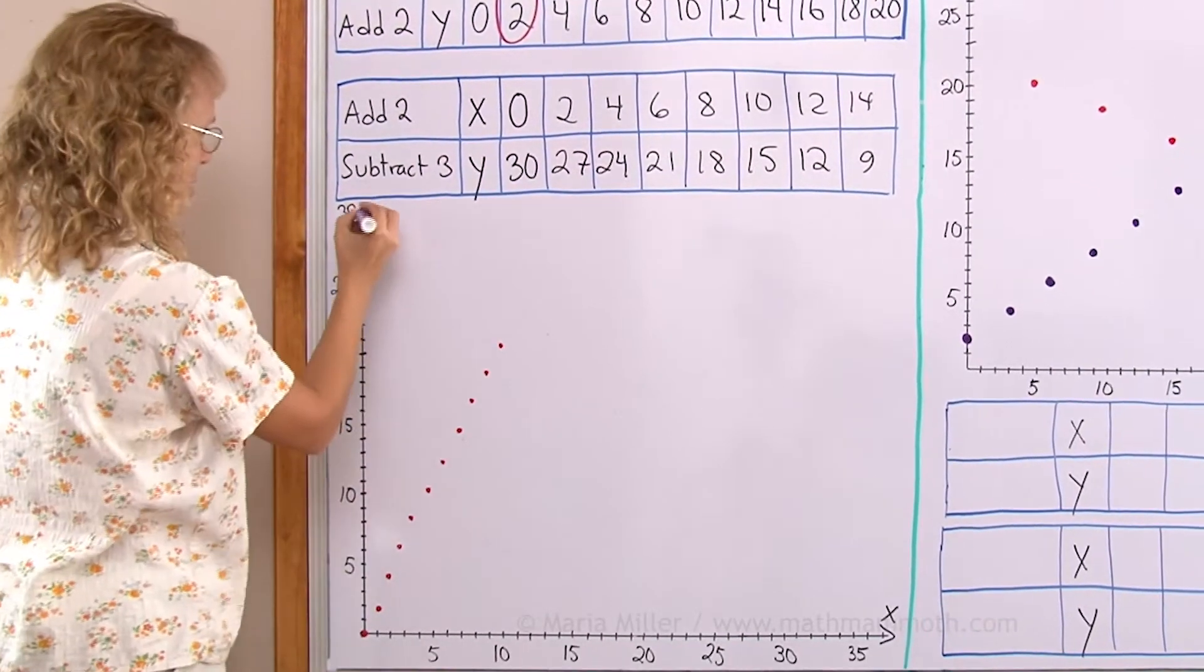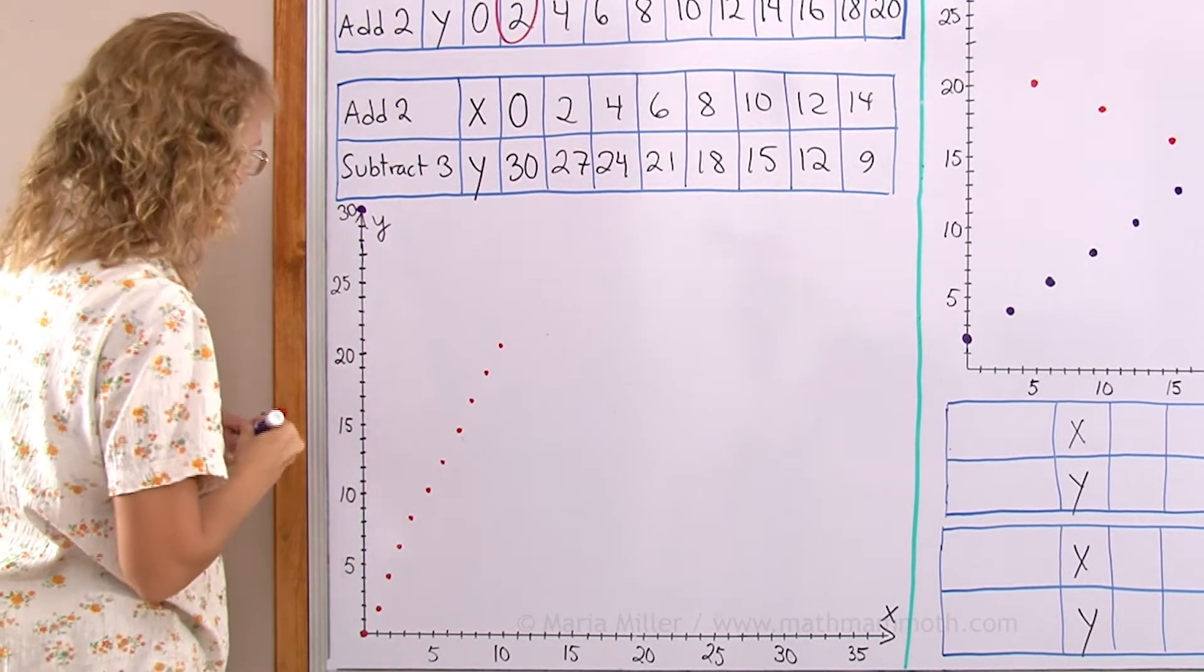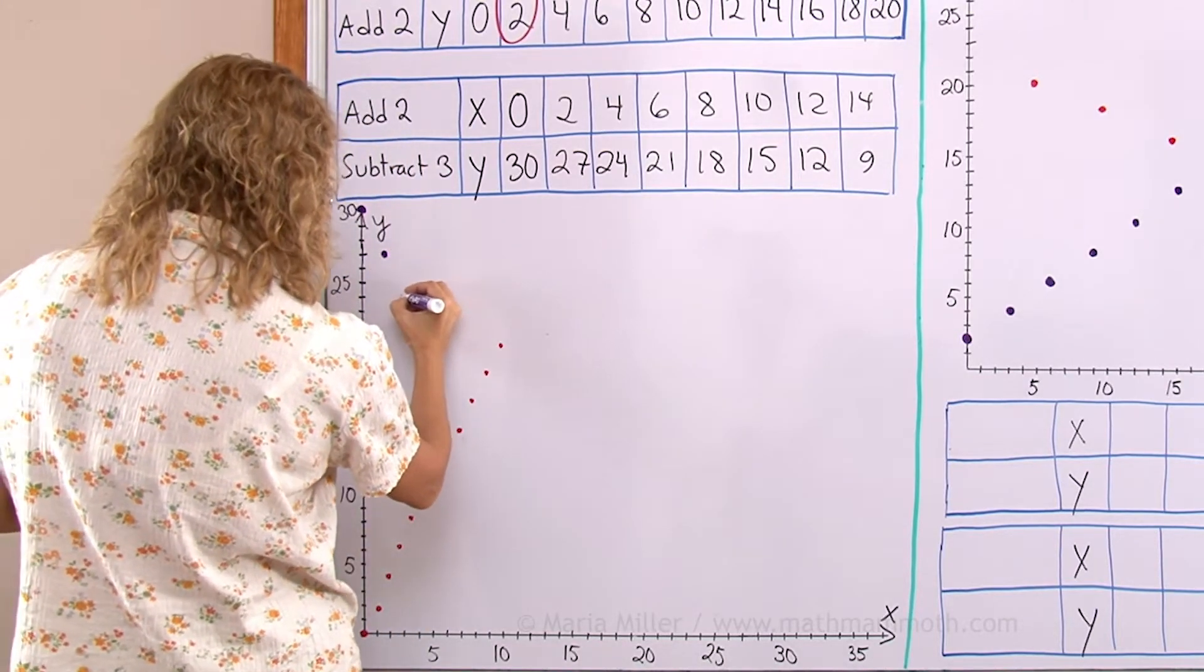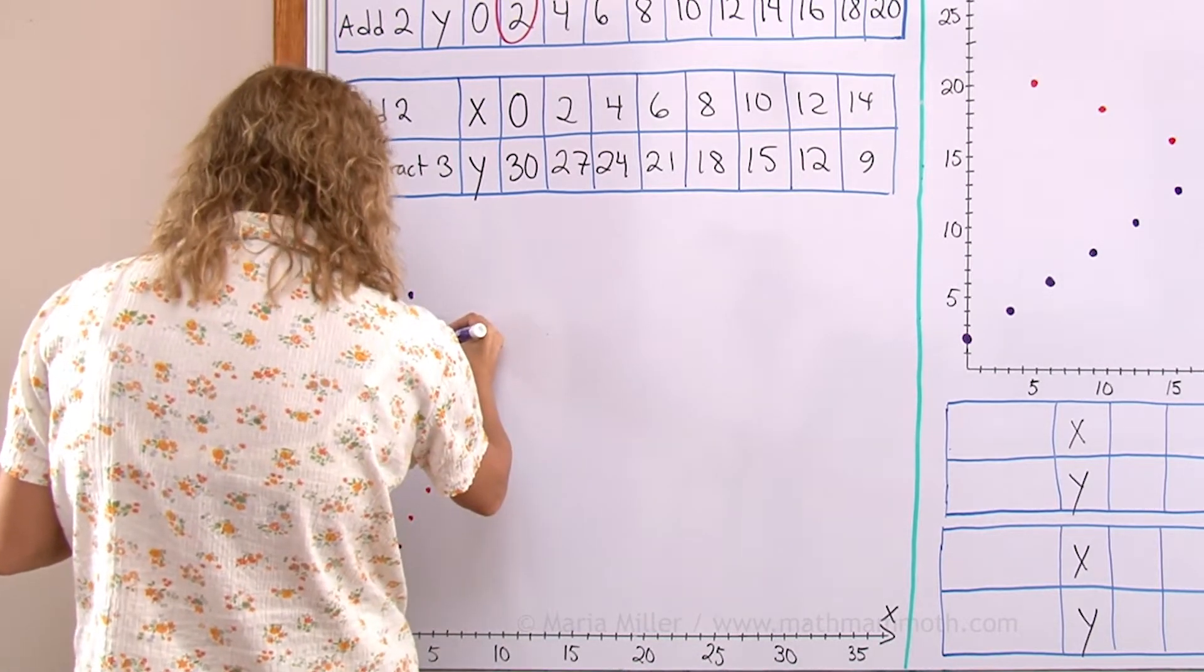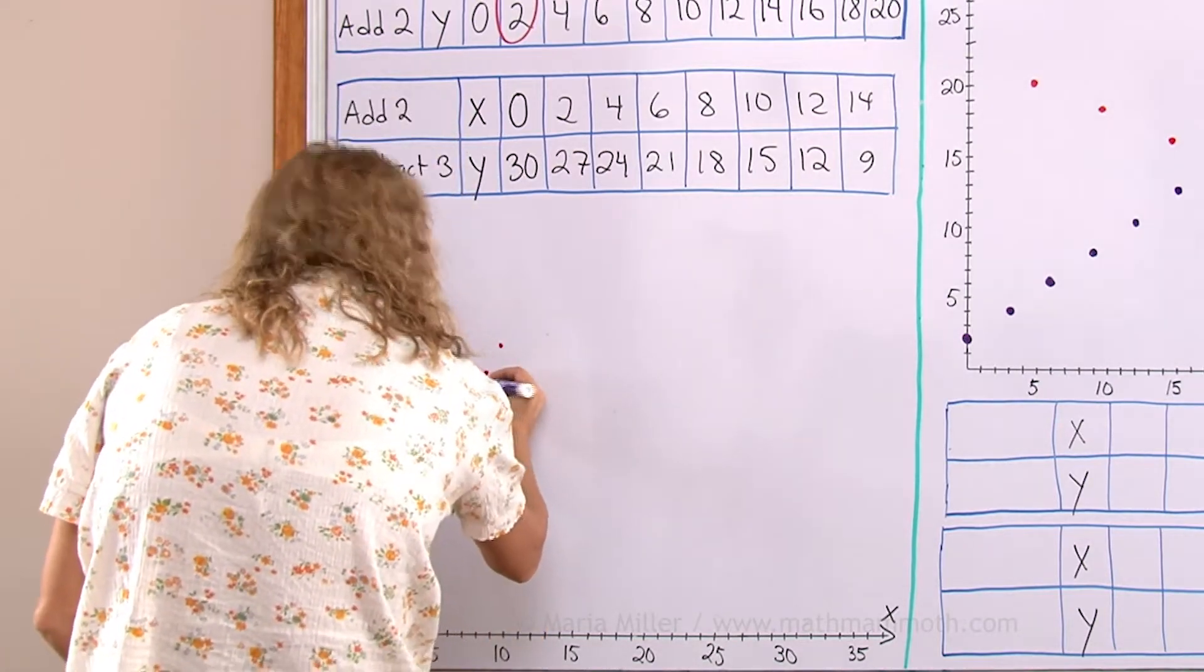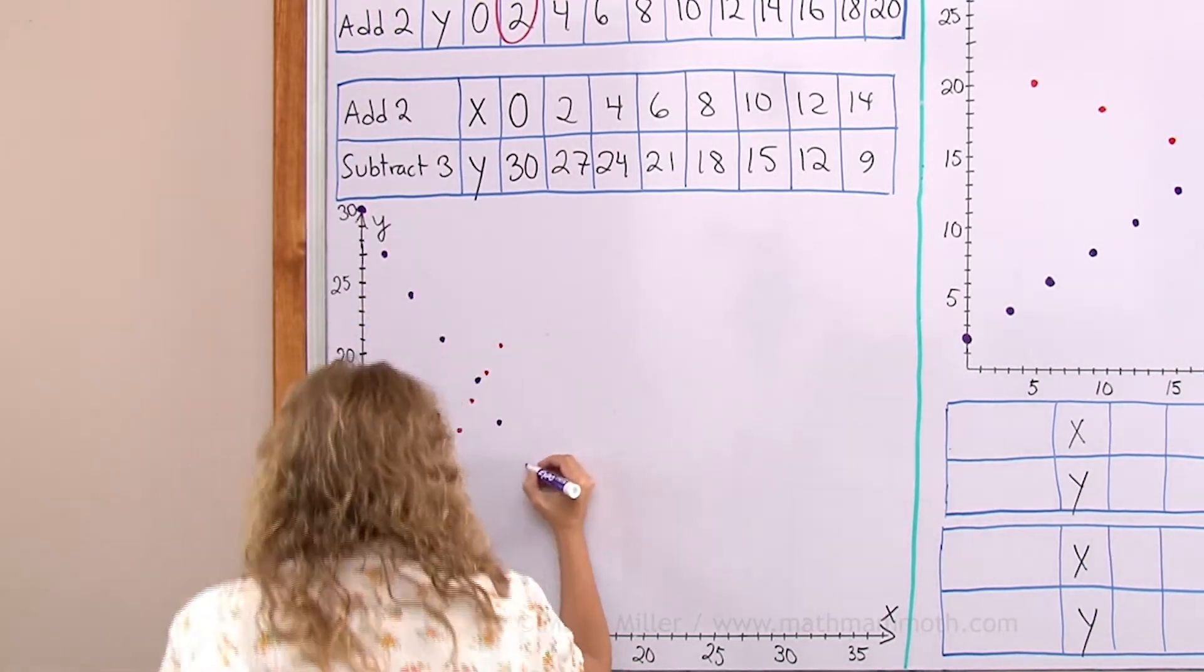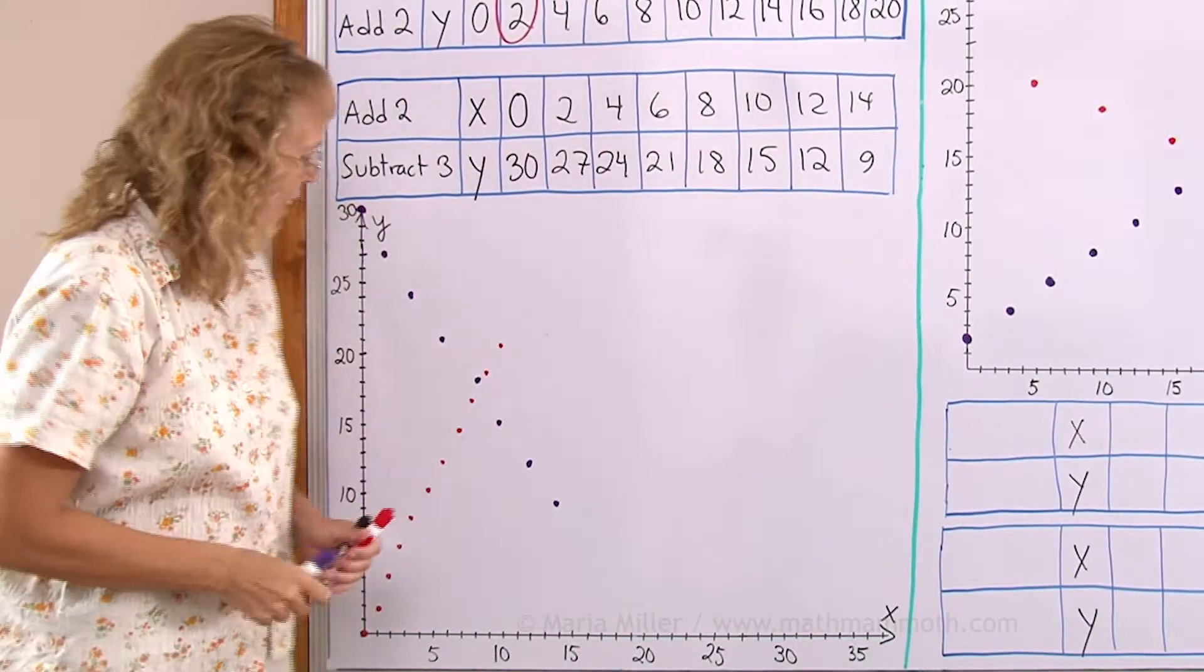Now see what happens with our points. 0, 30 is way up here. And then 2, 27, 4, 24, 6, 21, 8, 18, 10, 15, 12, 12 and 14, 9. Okay I got those plotted.